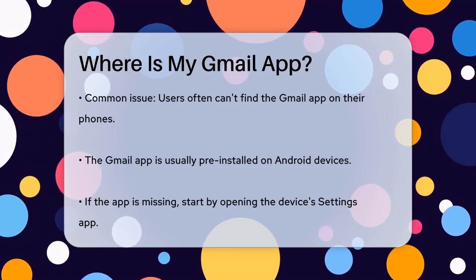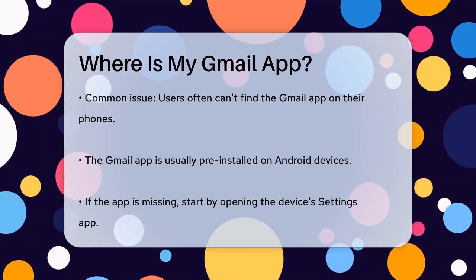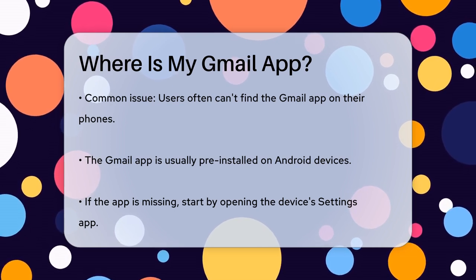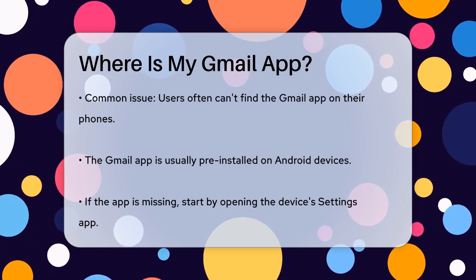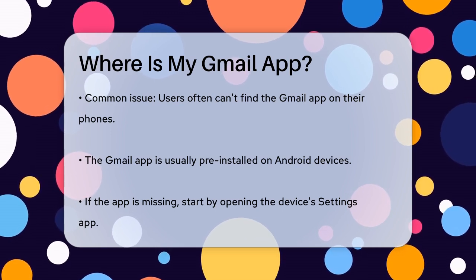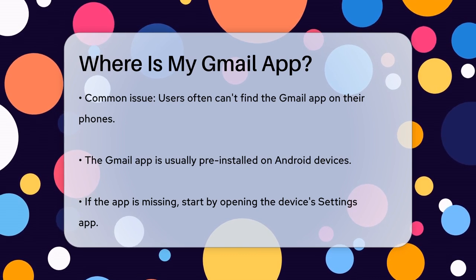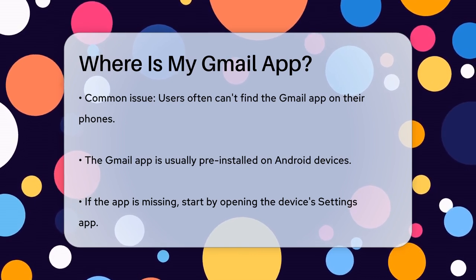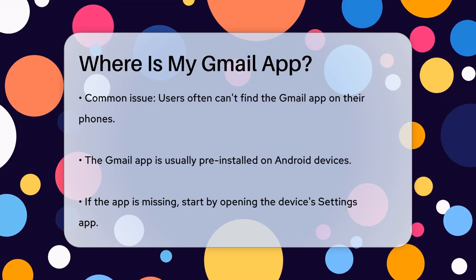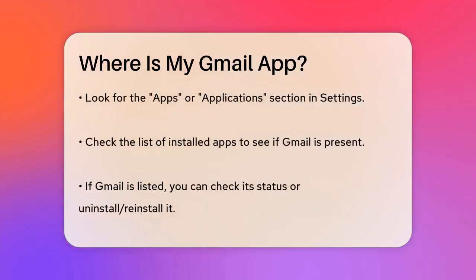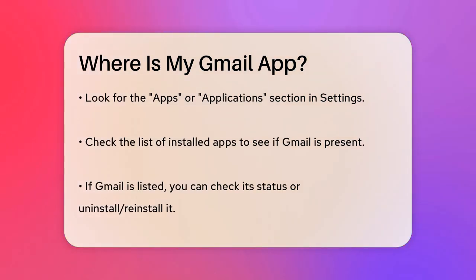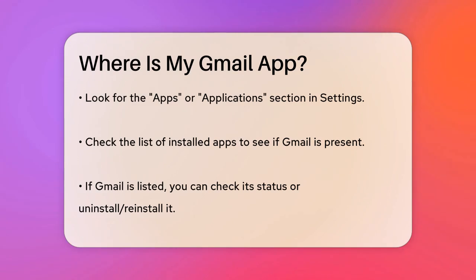First, let's start with the basics. The Gmail app is typically installed on your Android device by default, but if you've uninstalled it or can't find it, here's what you can do. Open your device's Settings app — this is usually the gear icon or a cog — where you manage all your device settings. Once in Settings, tap on the Apps or Applications section. You'll see a list of all the apps installed on your device. Scroll through this list to see if Gmail is listed. If it is, you can tap on it to check its status, or to uninstall and reinstall it if needed.